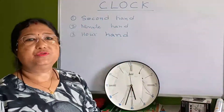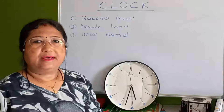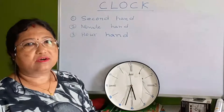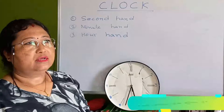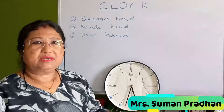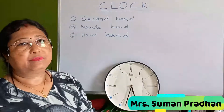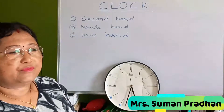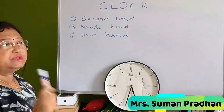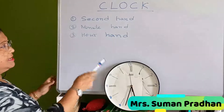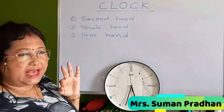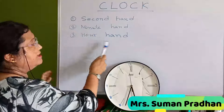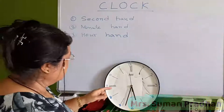Hello children, today we are going to learn about time — how to read a clock. Last time I gave something to write; I hope most of you have done it. Those who haven't, please do it now. In our clock we have three hands: the second hand, the minute hand, and the hour hand.